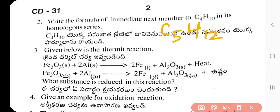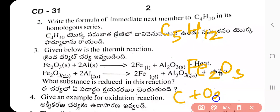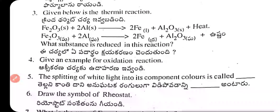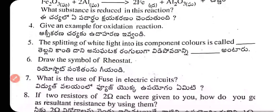Question 3: In a thermite reaction, what substance is reduced? Ferric oxide (Fe₂O₃) is reduced. Question 4: Give an example of an oxidation reaction. C + O₂ → CO₂. Addition of oxygen is called an oxidation reaction.